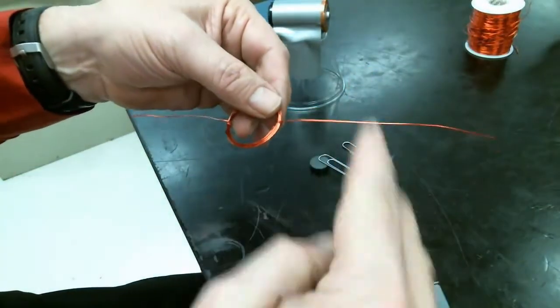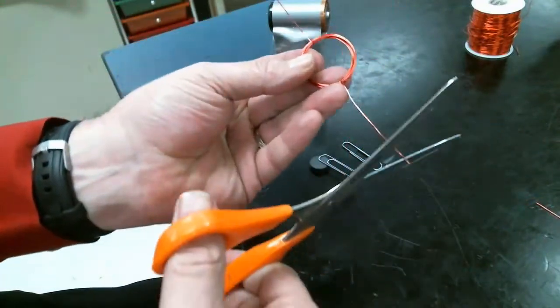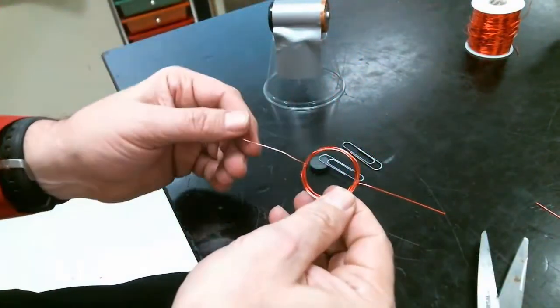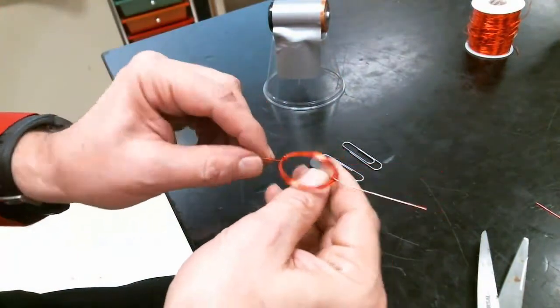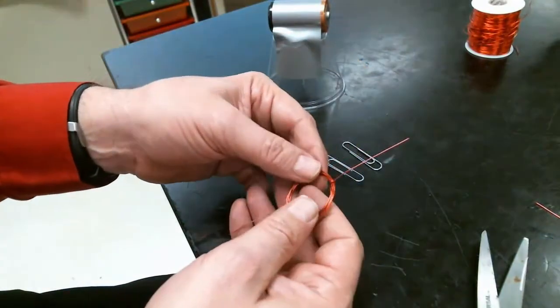Now I'm going to trim off a little bit because it doesn't need to be quite this long. You don't want to trim off too much and you'll see why in a little while. But now I've got my coil. One side completely sanded and one side only sanded halfway.